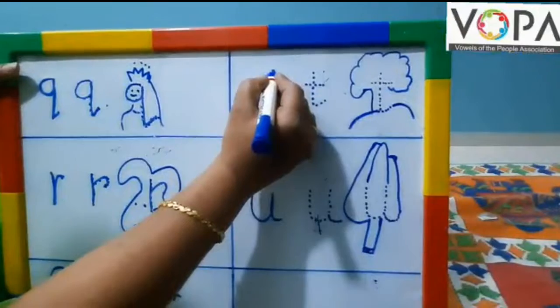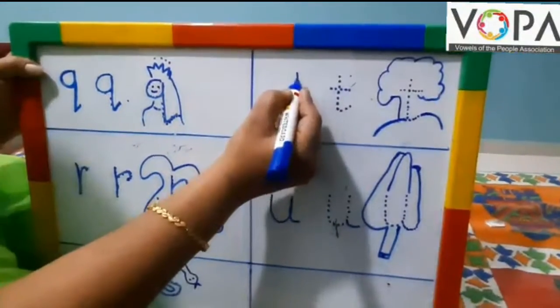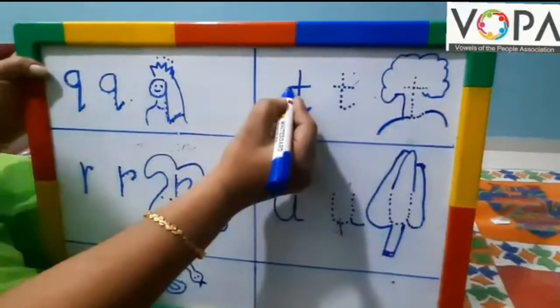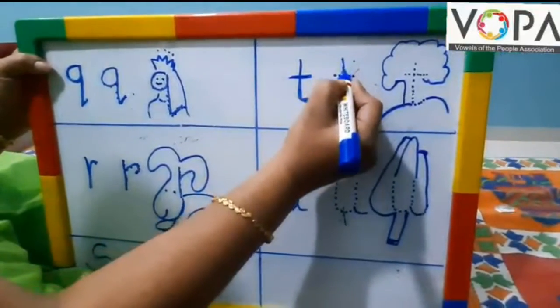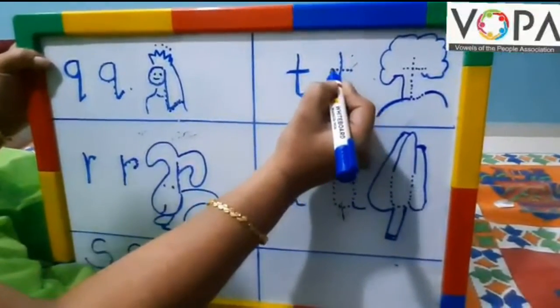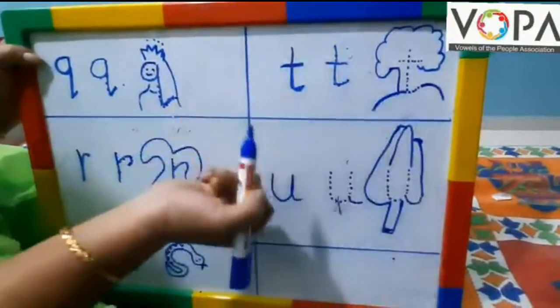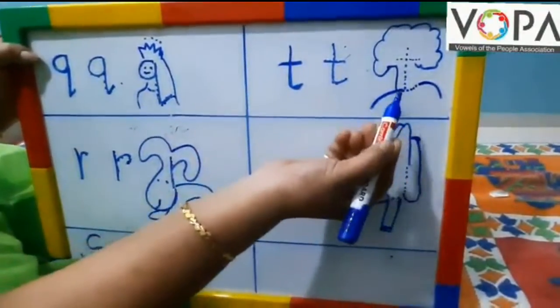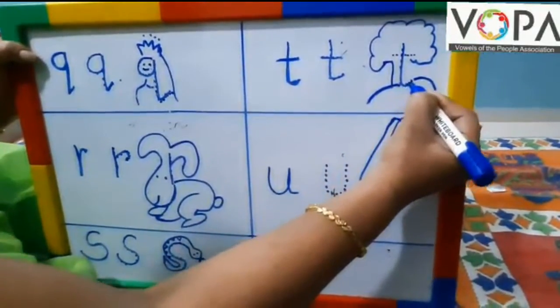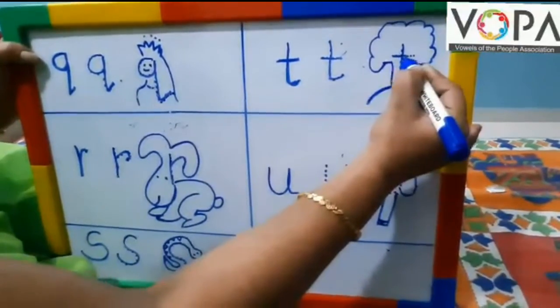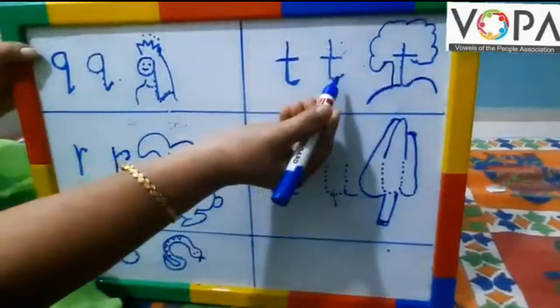This is T. This is how to write T. T for Tree. You can also draw Tree with the letter T. T for Tree. And color it. T for Tree.